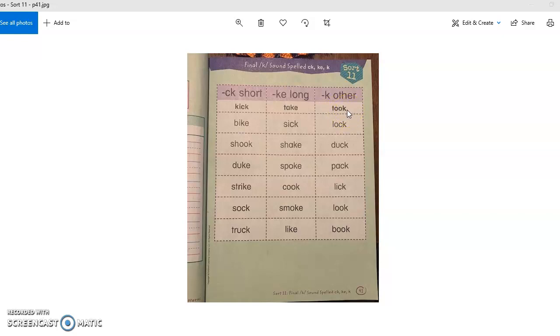So if it's got a CK, you're going to be putting it on the CK list. If it's got a KE at the end, then you're going to be putting it on that list, and if it's just got a K, then you're going to be putting it into that list.